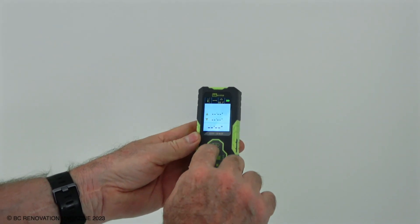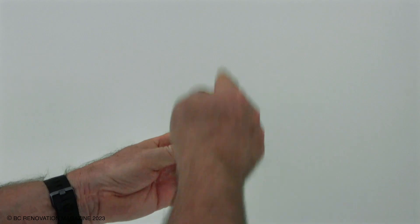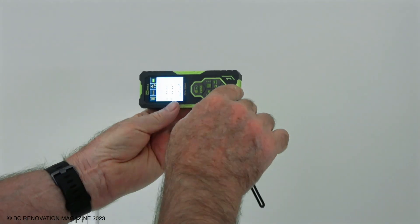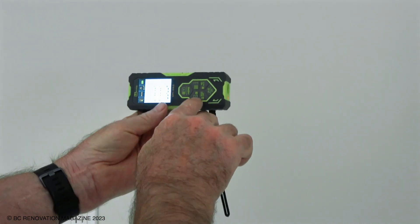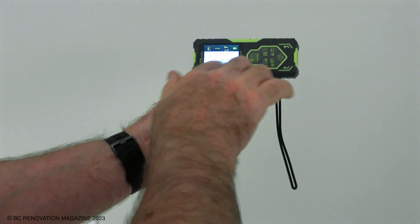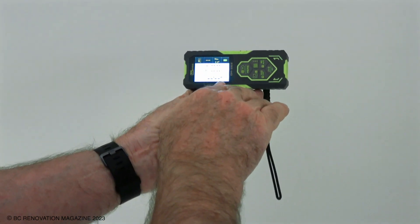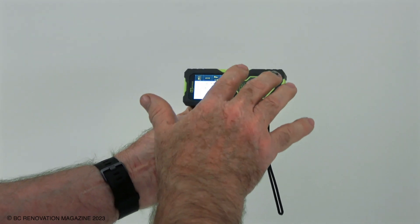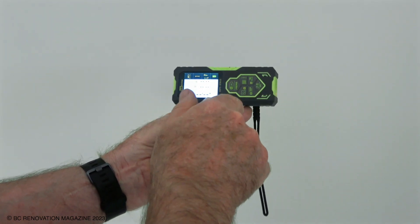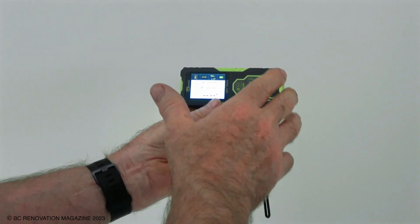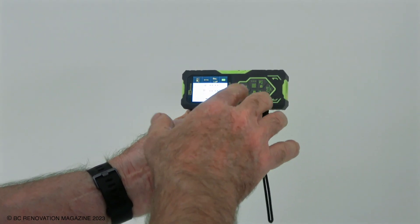We can change the screen from this vertical orientation. If we go to horizontal orientation, we can push our function button to change it to a horizontal layout. And we can also change the units of measurement. Right now I have it set for measuring in feet and inches. If you want to measure in metric, you can go into the menu and change to metric as well.